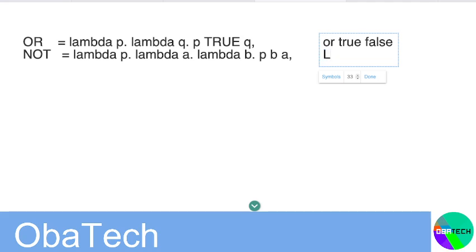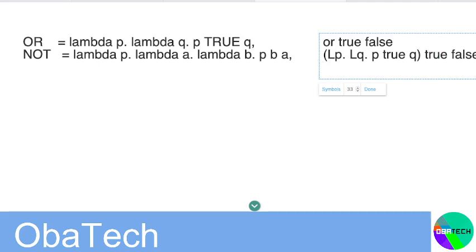I'm gonna use a capital L for it. So LP dot LQ. P true, Q, on true and false. Then we're going to end up with something like KDA, which I was hinting to. This should be true true false.